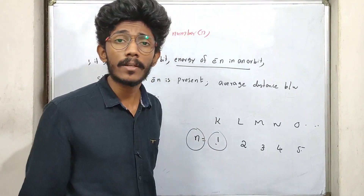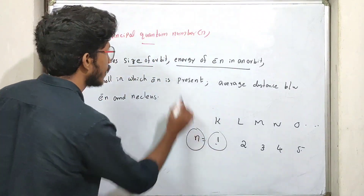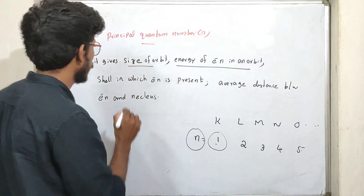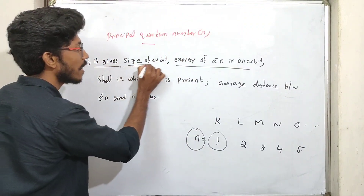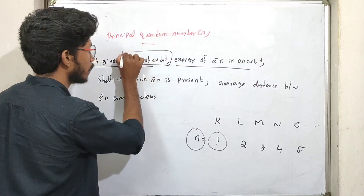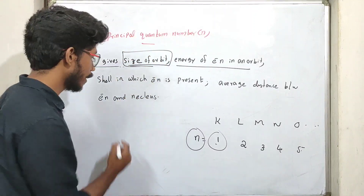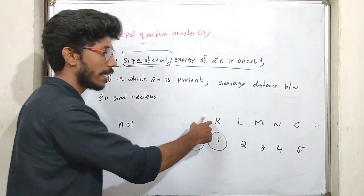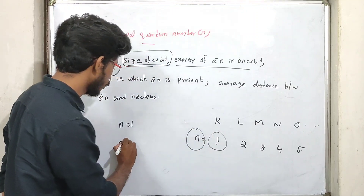If we consider it, we will use its properties. It gives the size of the orbit. I can tell n equals 1 is K shell, and n equals 2 is L shell.